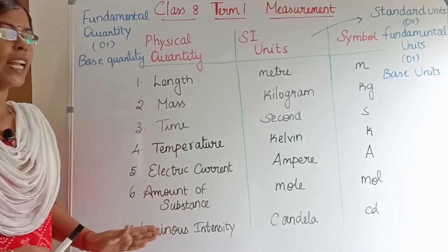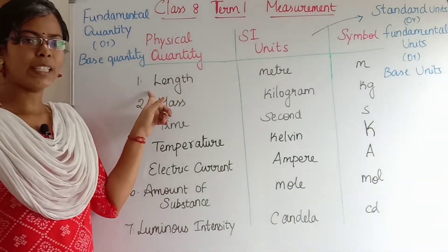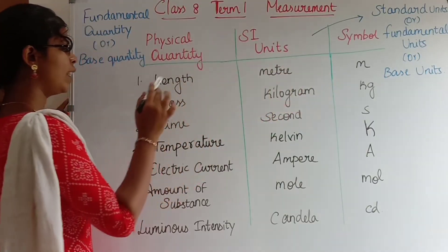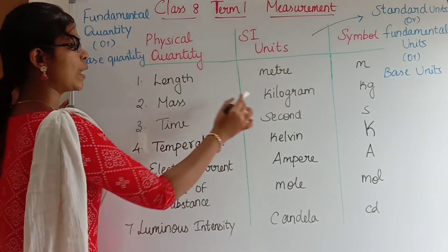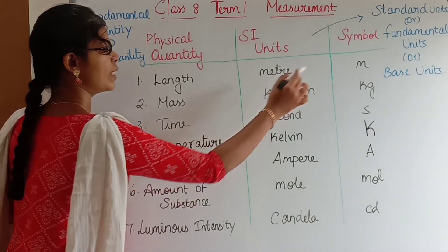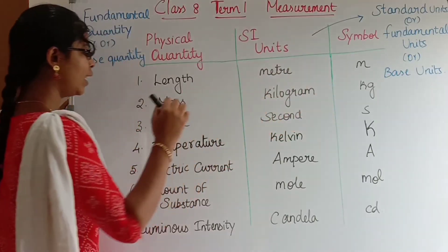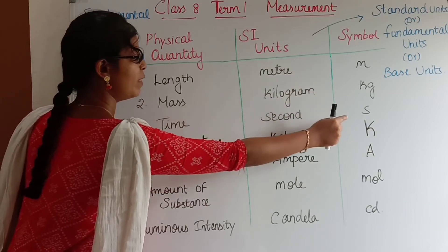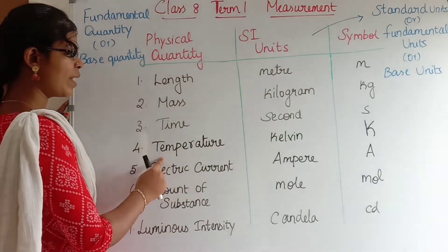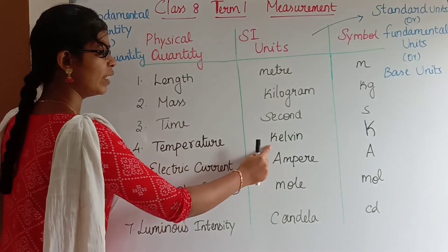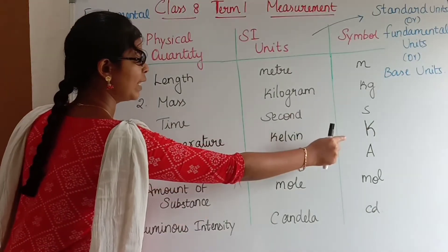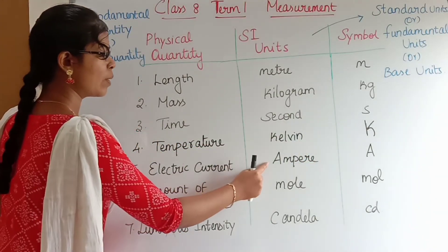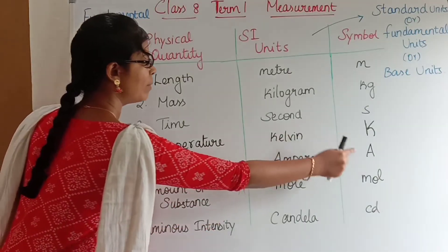Now, the first physical quantity is length. Its SI unit is the meter, with symbol m. Next is mass — its SI unit is the kilogram, with symbol kg. Next is time — its SI unit is the second, with symbol s. Next is temperature — its SI unit is the kelvin, with symbol K. Next is electric current — its SI unit is the ampere, with symbol A.